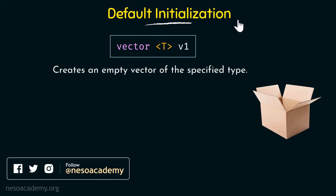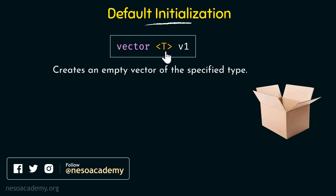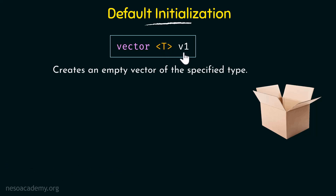Starting with the first one, we have default initialization. In default initialization it creates an empty vector of the specified type. We specify the vector keyword followed by the type of the vector enclosed within angle brackets, followed by the name of the vector. What this will do is create an empty vector of the specified type.